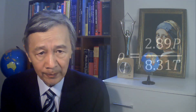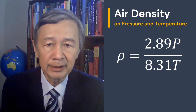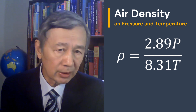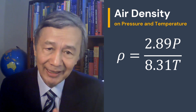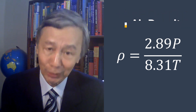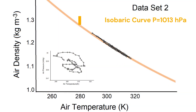How about air density? I calculated air density based on ideal gas law, which can be written in a simple form where rho is air density in kg per cubic meter, p is air pressure in hectopascal, and T is air temperature in Kelvin. You can use this simple formula to analyze your local air density too. Then I plotted the dependence of air density on the surface air temperature. As you can see, air density decreases as air temperature increases, which can be well fitted by an isobaric curve.